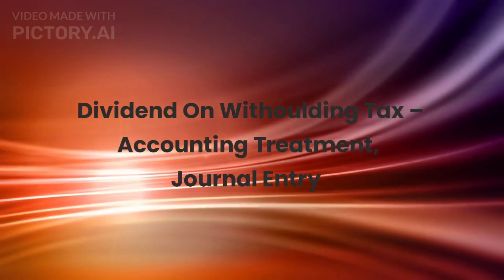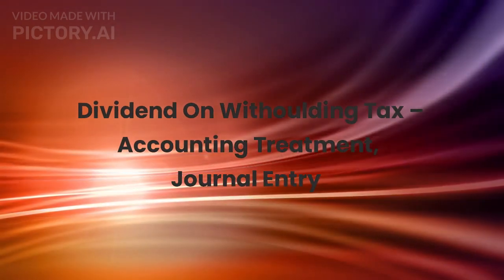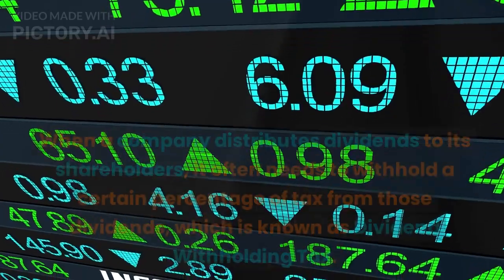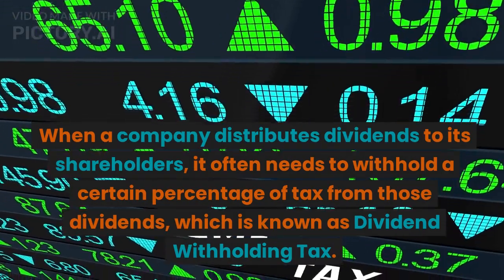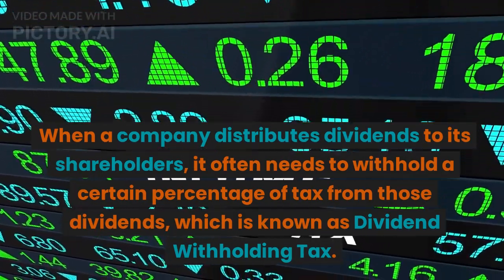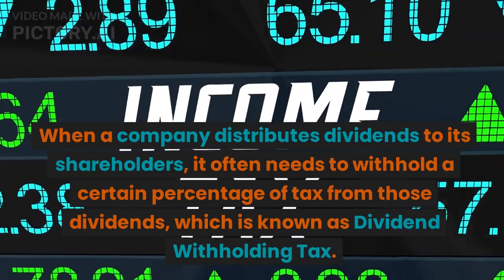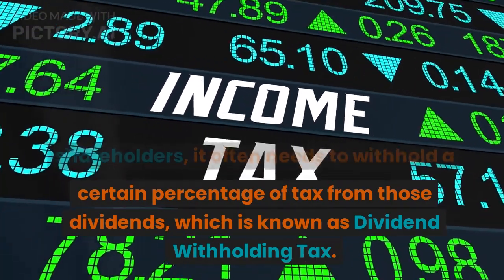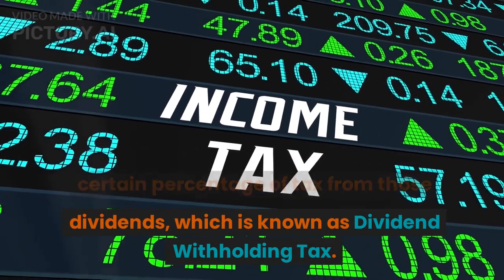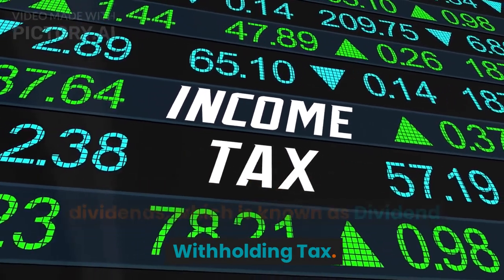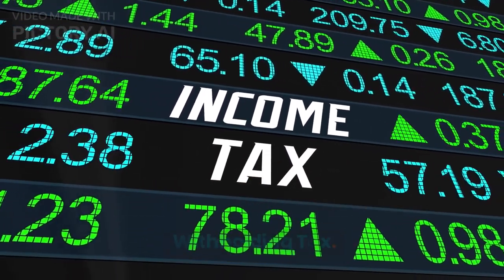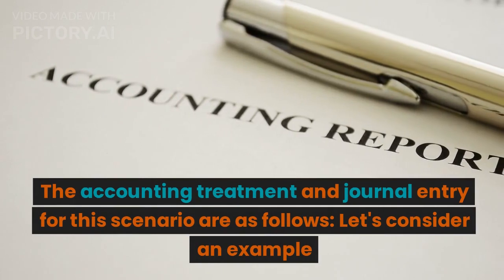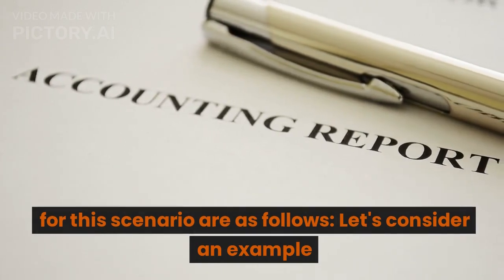Dividend withholding tax: accounting treatment and journal entry. When a company distributes dividends to its shareholders, it often needs to withhold a certain percentage of tax from those dividends, which is known as dividend withholding tax. The accounting treatment and journal entry for this scenario are as follows.